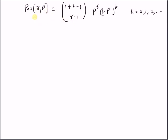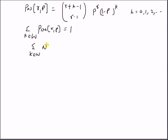The first property is that this distribution is normalized, that is, the summation over k belonging to the set of whole numbers of the Pascal distribution with parameters r and p is equal to 1. In the previous video, we already verified that the Pascal distribution is a special case of a negative binomial distribution with parameters r and 1 minus p, and we know that the negative binomial distribution is a normalized distribution, so its total probability is equal to 1. Therefore, the Pascal distribution is also normalized.